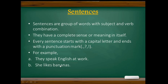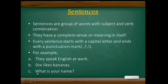Next example: 'She likes bananas.' So 'she' is the subject, 'likes' is the verb, and again we have a combination of subject and verb. It starts with a capital letter, ends with a full stop, and it is with a complete sense — so these words are called a sentence. Now, 'What is your name?' Here 'is' is the verb and 'your' is the subject. Subject and verb combination is there, and these group of words make a complete sense. It starts with a capital letter and ends with a question mark. So 'What is your name?' is also a sentence.